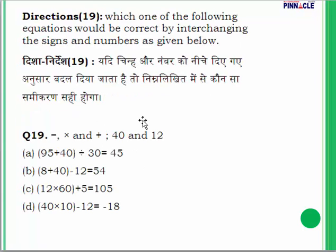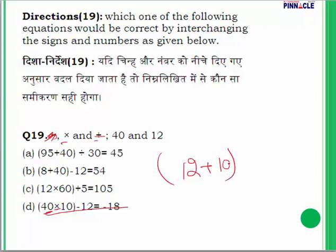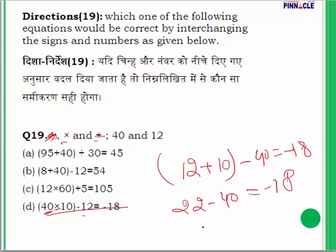Question 19: Interchange the signs (× and +) and the digits 40 and 12, then find which equation gives the correct answer. Applying to option D: replace 40 with 12 and × with +, and 12 with 40. This gives 22 − 40 = −18, which equals −18. So option D is the correct answer.